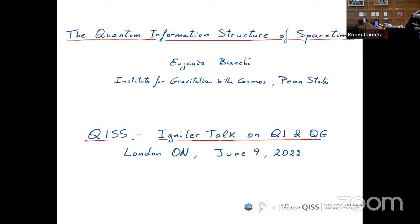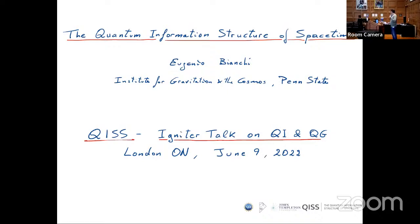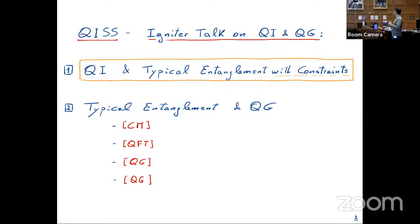Thank you, Francesca. I have really been enjoying the discussions of the past two days. I would like to contribute with this igniter talk on how we can use quantum information in quantum gravity, and I'm going to focus on one specific aspect — the use of the idea of typical entanglement, in particular typical entanglement with constraints, which is something that has come up more than once in the past few days.